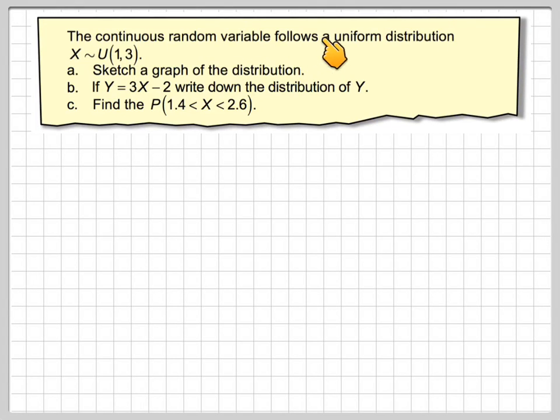The continuous random variable follows a uniform distribution, X following a continuous uniform distribution with a equals 1 and b equals 3. Sketch a graph of the distribution, and if Y equals 3X minus 2, write down the distribution of Y, and then find the probability that X lies between 1.4 and 2.6.